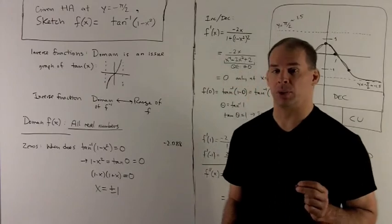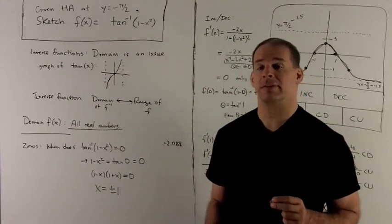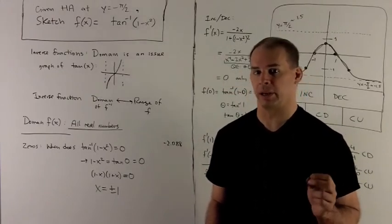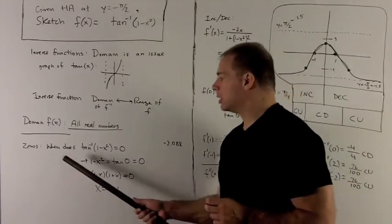Next, we just proceed as we normally would. We'll do zeros, first derivative and second derivative, and get a pretty graph.